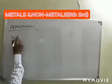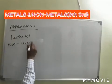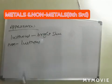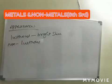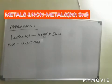Lustrous materials give a bright shine. For example, when you look at the rims of a new bicycle, that is lustrous. Generally, most metals are lustrous. But we cannot say that all lustrous materials are metals.